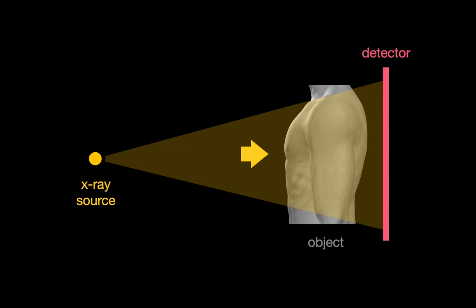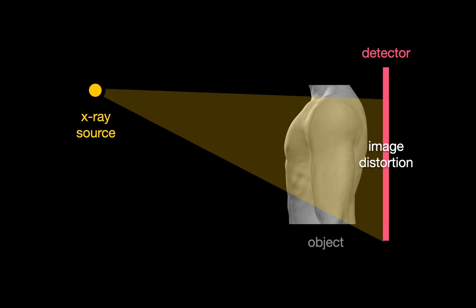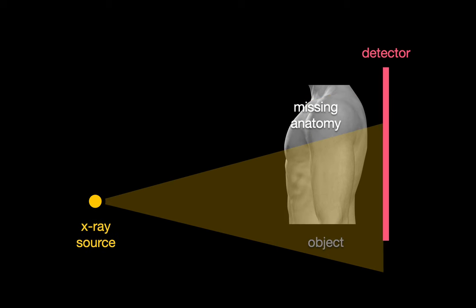The relative positions of the x-ray tube, the chest, and detector are important because the x-ray beam is cone-shaped. Moving the x-ray tube closer to the patient can result in apparent magnification of the patient's anatomy on their chest x-ray, while pointing the beam at an angle towards the patient may result in distortion of the patient's anatomy on their chest x-ray.